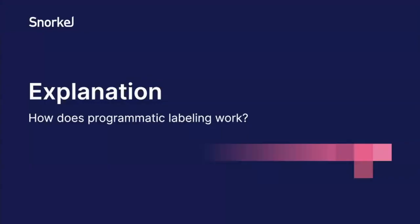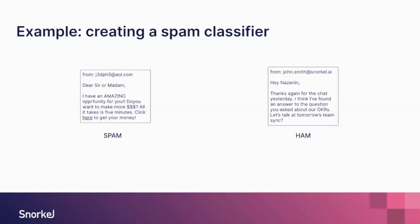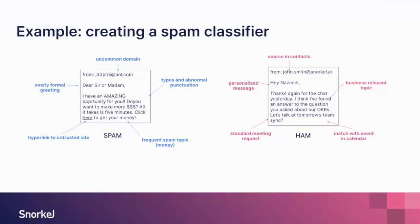Now I'd like to explain how programmatic labeling works using a spam classifier example. On the left we have spam and on the right we have ham — something that is not spam. There are several cues we can use: on the spam side, an uncommon domain, overly formal greeting, typos, hyperlinks to untrusted sites, and talk about money. On the ham side, we know the source, it's a personalized message, the topic is relevant, and it matches events on a calendar.